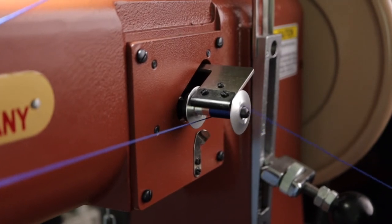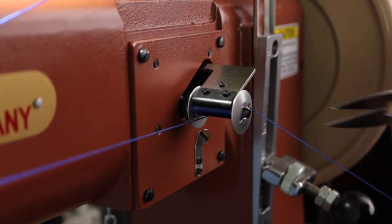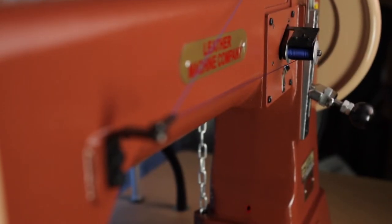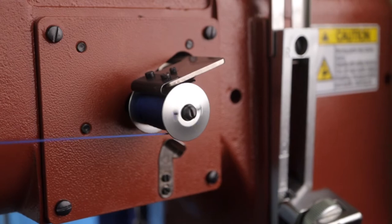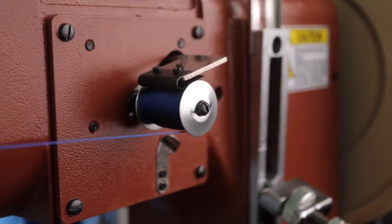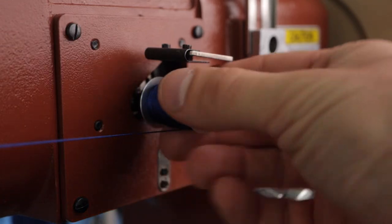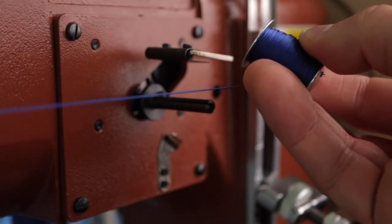You can trim the thread end after you have wound the bobbin up for a bit. Once that keeper flips up and detaches from the bobbin, you can remove the bobbin from the winder.